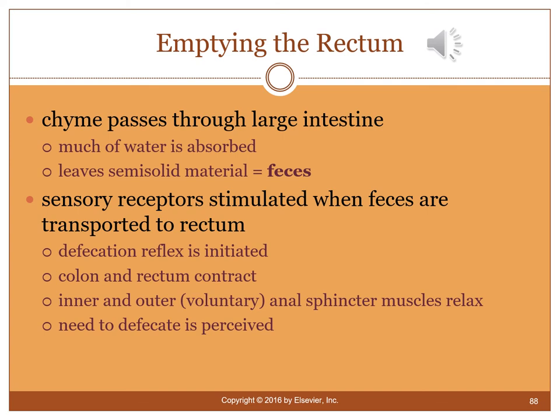At the end of the digestive process, chyme passes through the large intestine as feces, with water absorbed along the way. When feces enter the rectum, sensory receptors are stimulated and trigger the defecation reflex — contractions that move feces through inner and outer voluntary sphincter muscles, signaling to the brain that the digestive process is complete and defecation is needed.